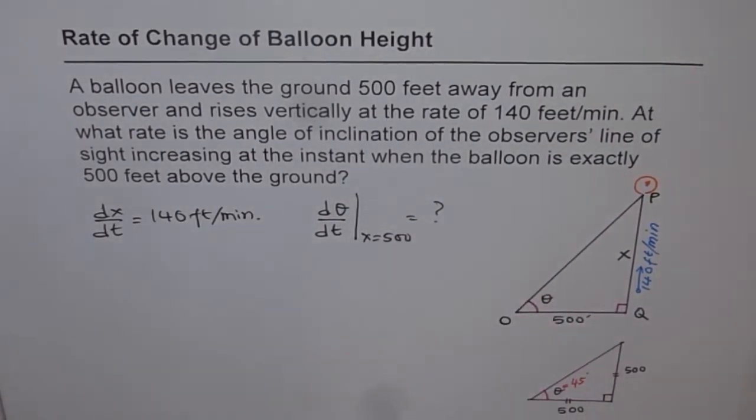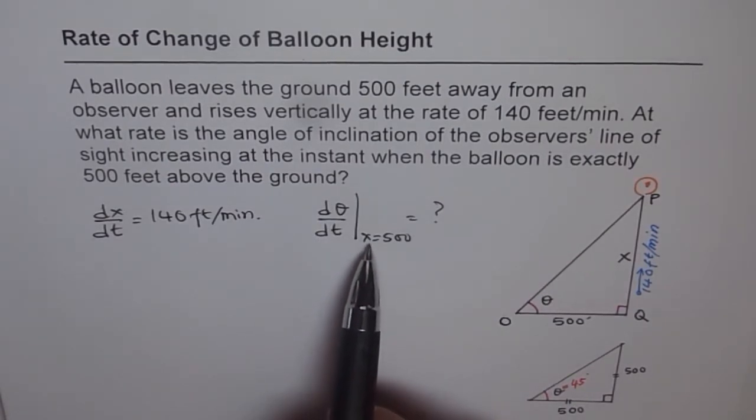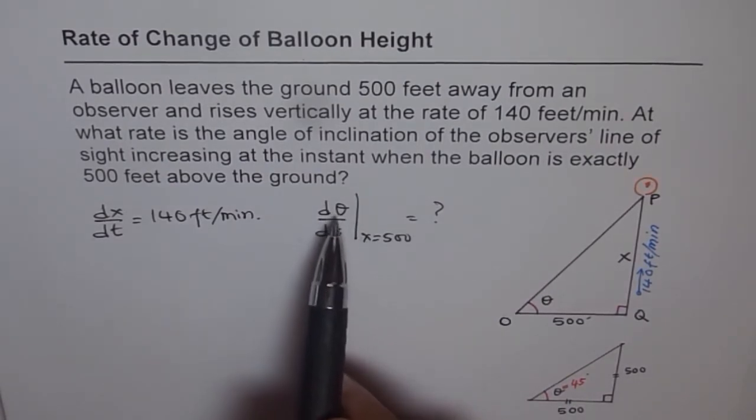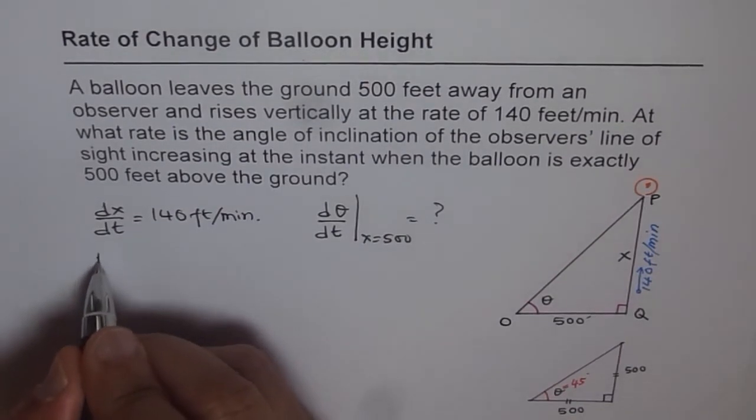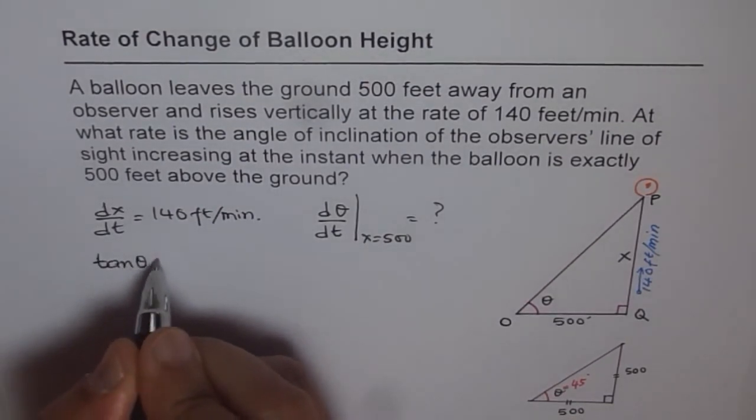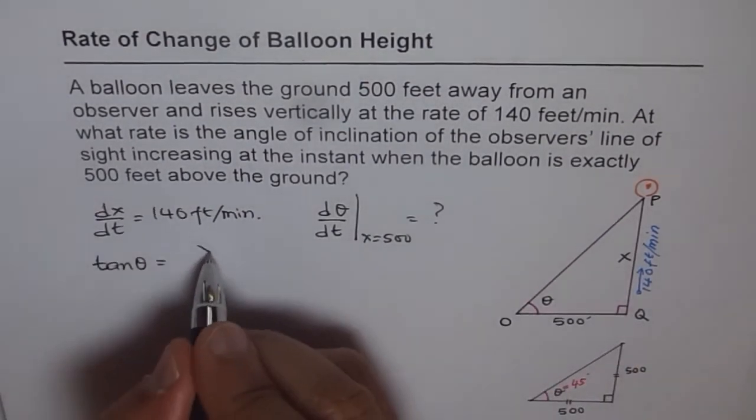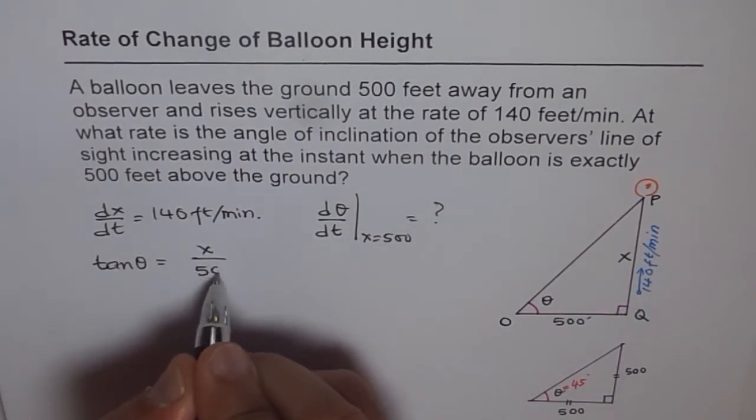Now since we need to find theta for a given x, we need to relate them somehow. Theta and x. It can be related very easily with the help of tangent of theta. So what is tan θ equal to? tan θ equals x over 500. So that is the relation.